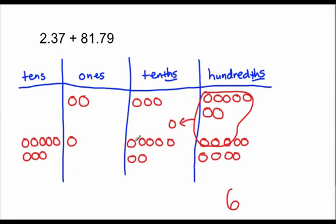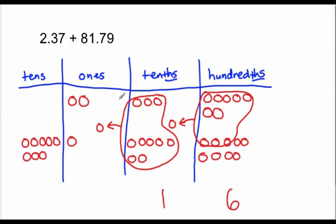Now I count my tenths: seven, eight, nine, ten tenths. Those ten tenths are enough to make one whole. Ten tenths equal one. How many tenths are left unbundled? There's one. I put a decimal point between the ones and tenths place to show the difference between wholes and parts of a whole. In the ones place I count: one, two, three, four — not enough to bundle, so I write four ones. No tens plus eight tens is eight tens. My sum is eighty-four and sixteen hundredths.